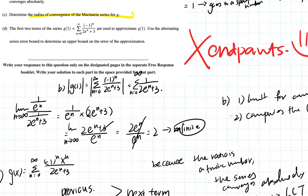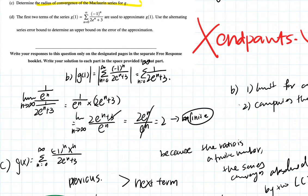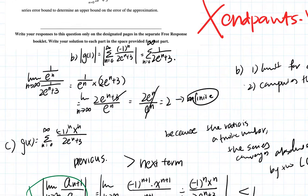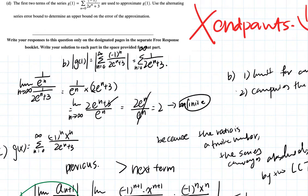Part D asks us to find the first two terms of the series g of one, which equals the summation from n equals zero to infinity of negative one to the nth power over e to the n plus three, and use the alternating series error bound to determine an upper bound on the error of the approximation.